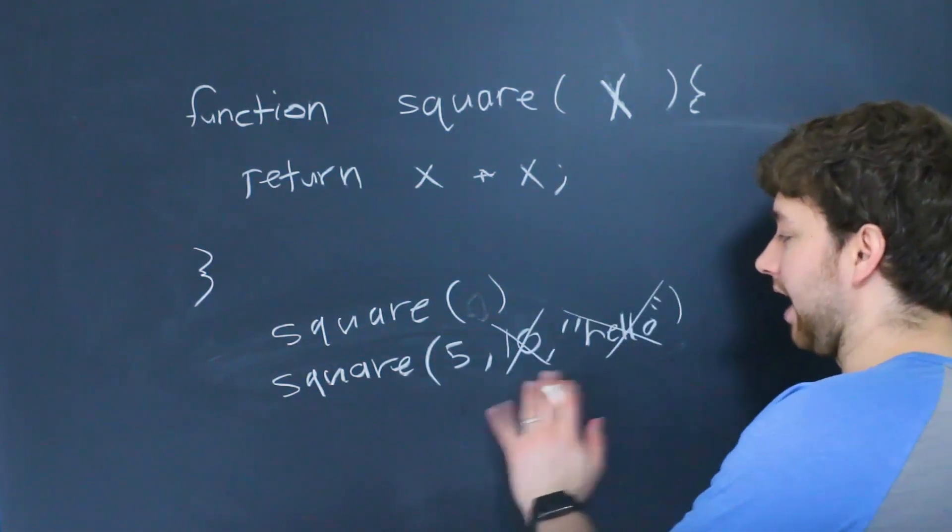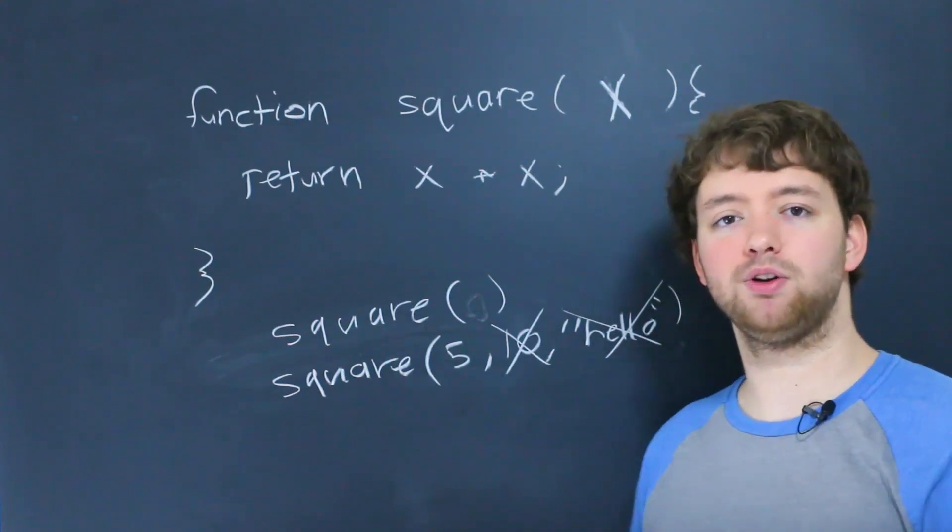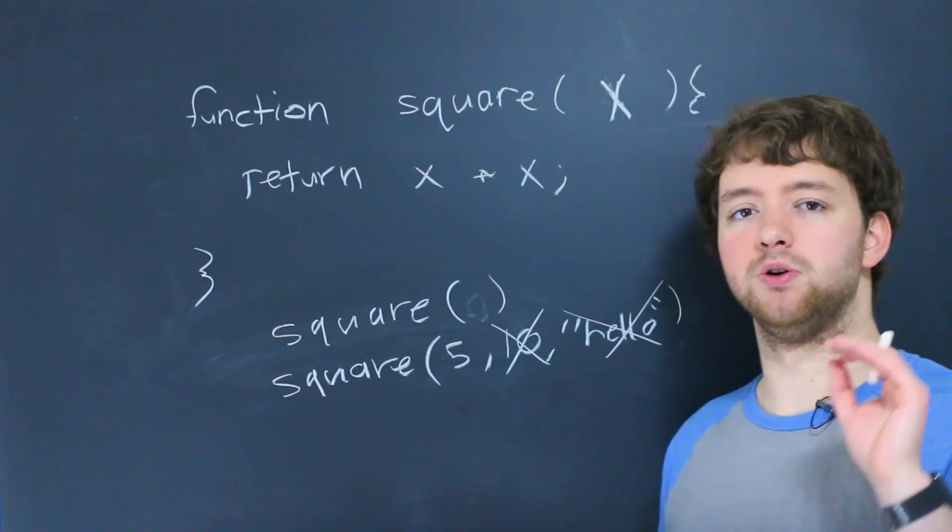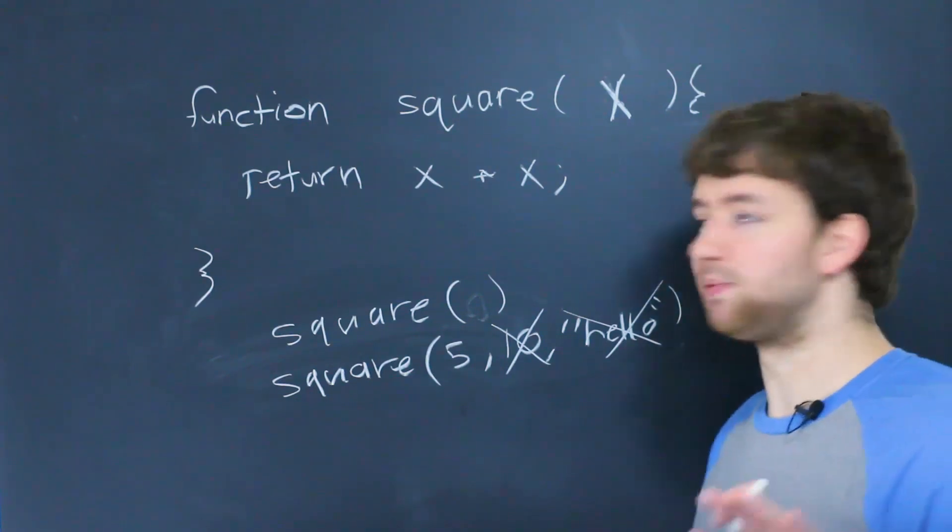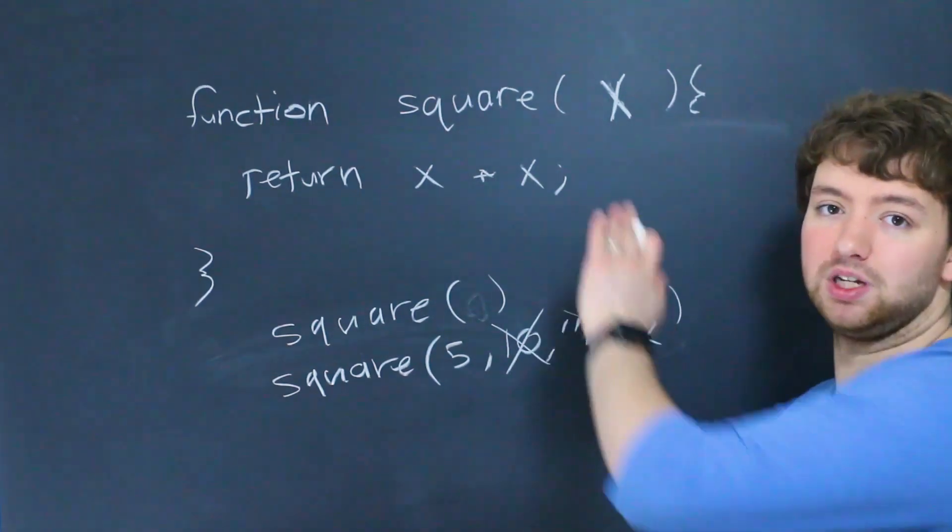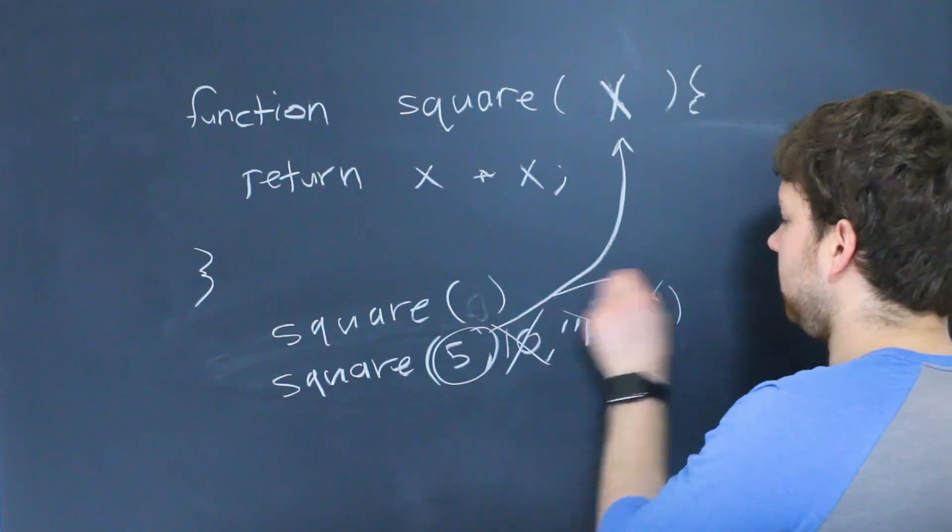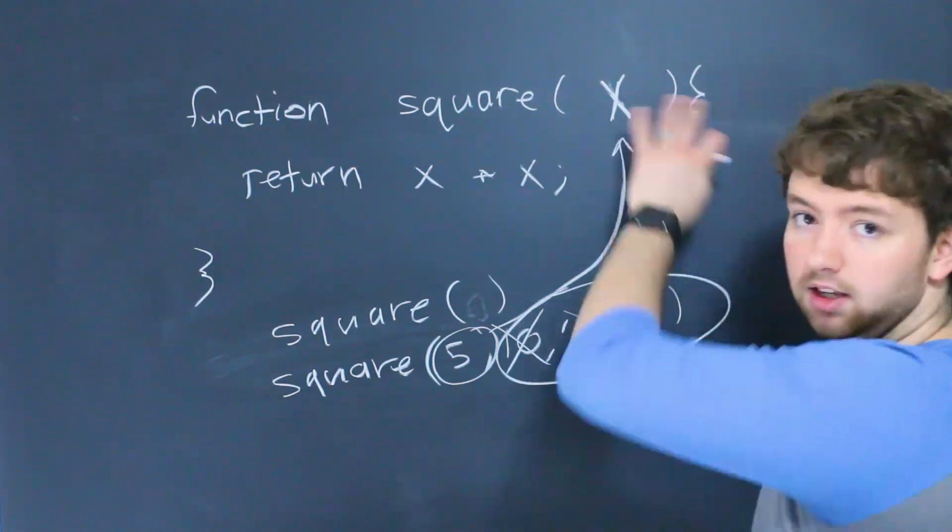There actually is a way to access those extra arguments through an implicit arguments parameter, but we're going to get into that in a future video. But for the general purpose here, these values are not going to be accessible in any of the parameters we define up here. So this value 5 will get assigned to x. These will not be assigned to anything here.